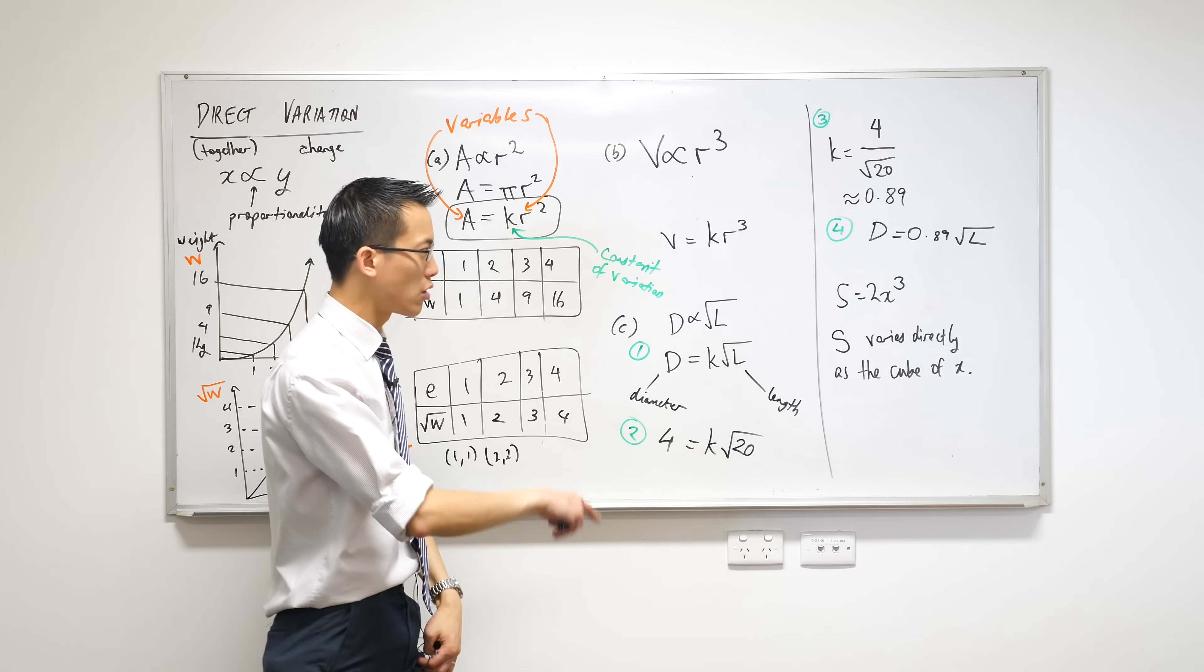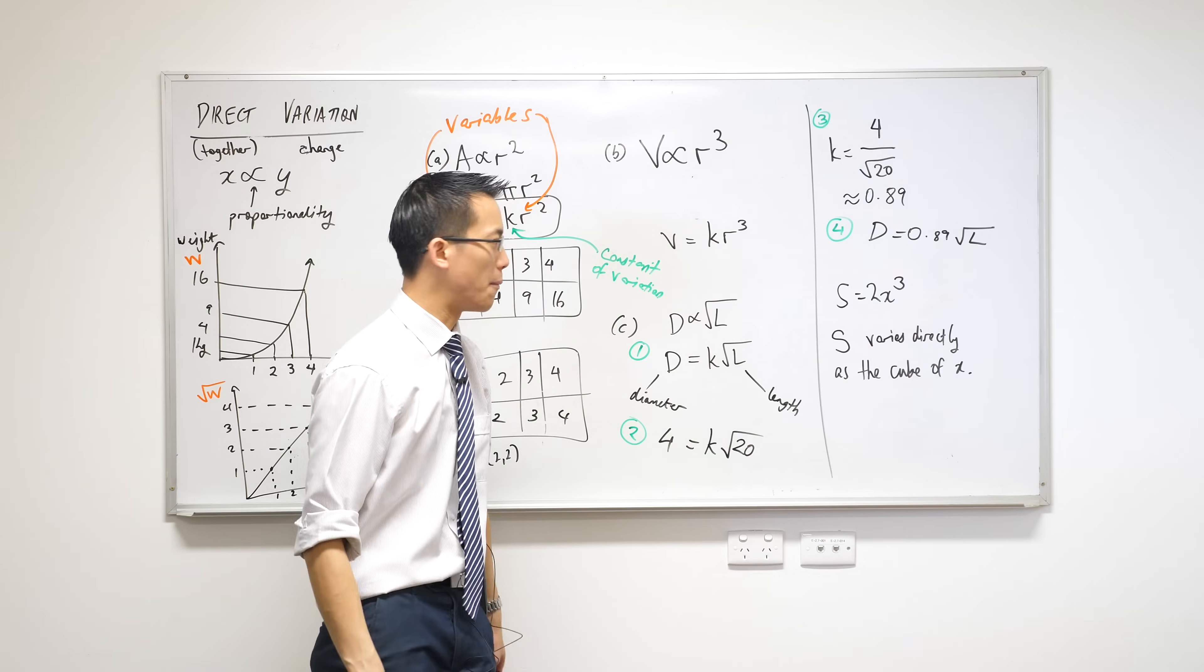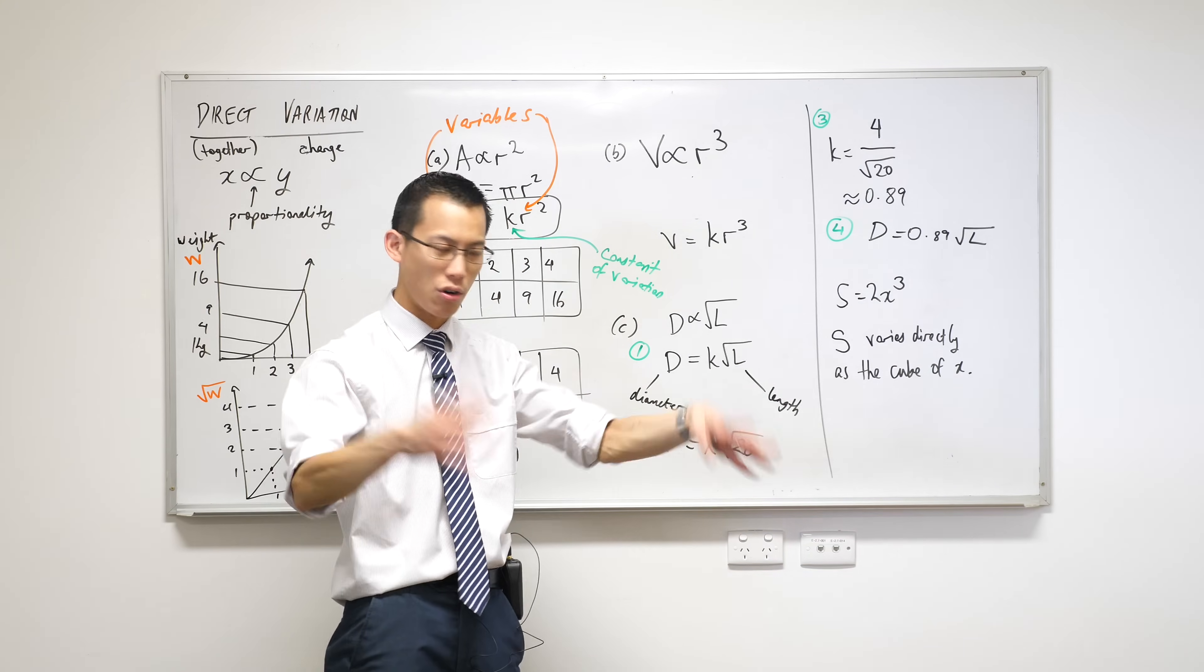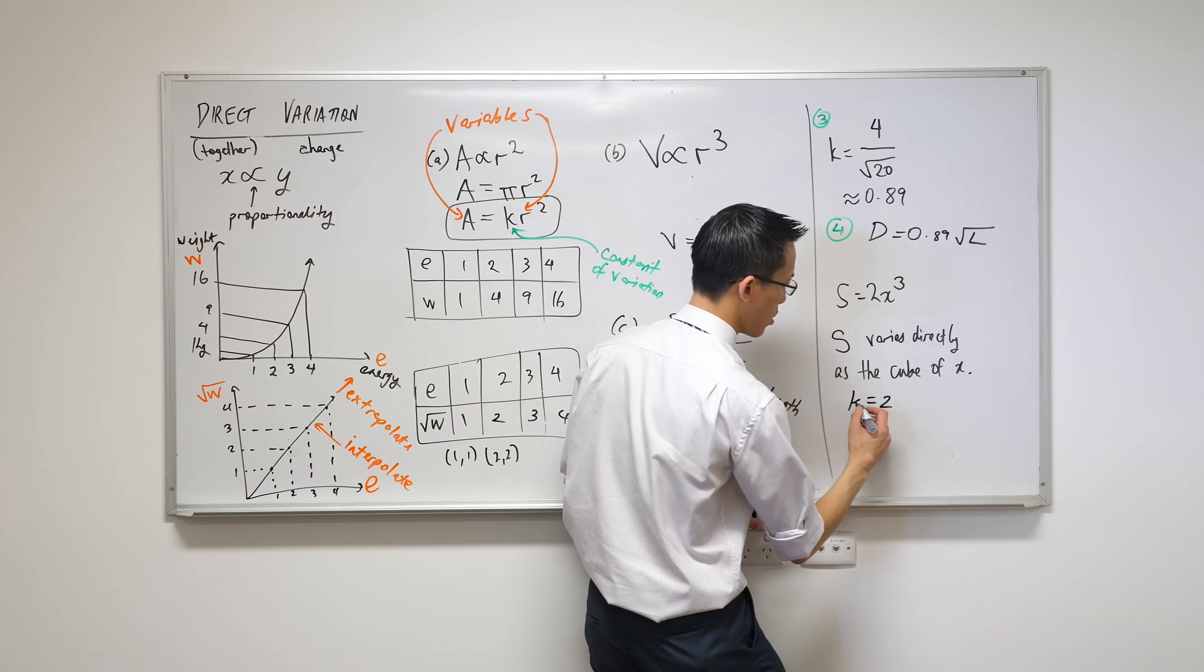It's two. You know it's the constant because no matter what S or X you put into there, two stays the same. Every single equation always has two. So you would say K equals two.